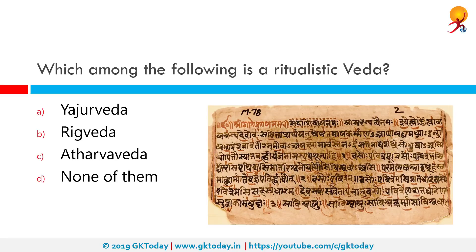Which among the following is a ritualistic Veda? Correct answer is Yajur Veda. Yajur Veda — where 'Yaj' means to worship and 'Veda' means knowledge — is the Veda primarily of prose mantras for worship rituals.